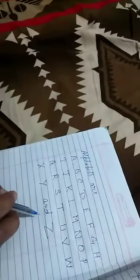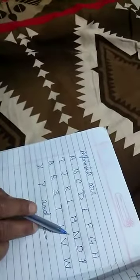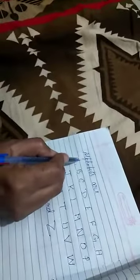Some alphabets are vowels. Kuch alphabets jo hote hain, woh vowel hote hain. Toh woh alphabets kaun kaun hote hain? A, E, I, O, and U. Okay? A, E, I, O, and U.